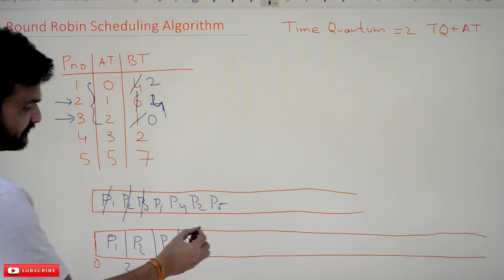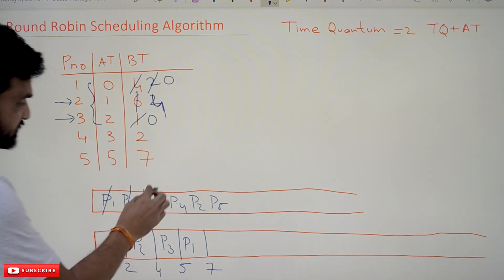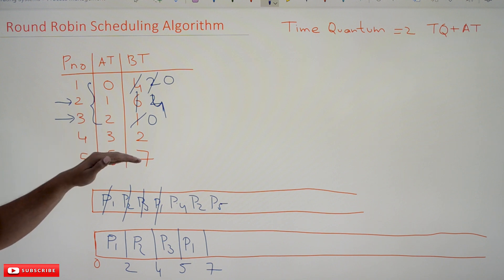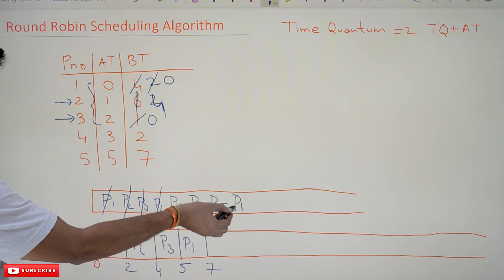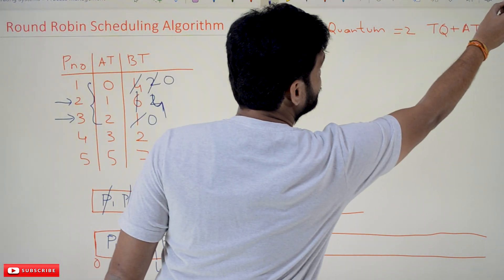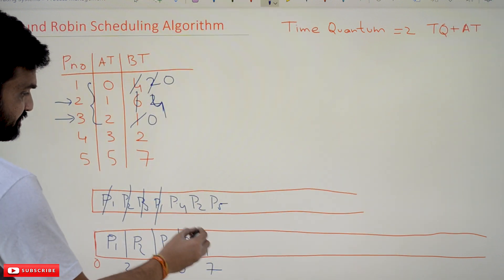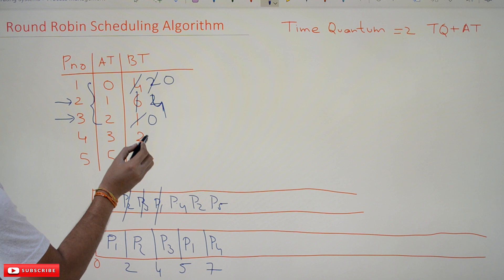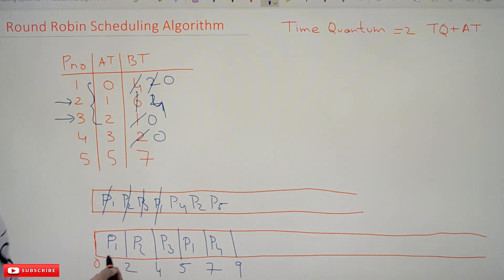The next process in the queue is P1. We execute P1 for two units of time, from t=5 to t=7. P1 now has zero remaining burst time, so its execution is completely done. There is no need to put P1 back into the queue — it is permanently removed. The next process is P4.